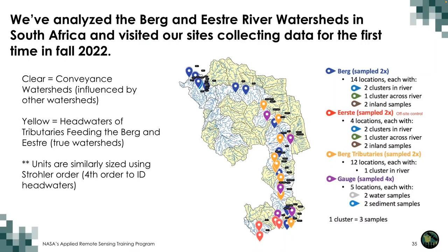So far, we have analyzed the Berg and Irsty River watersheds in South Africa, collecting data for the first time in fall 2022. Clear polygons on our site map represent conveyance watersheds influenced by upstream watersheds, while yellow polygons represent headwater tributary watersheds feeding the Berg and Irsty. Color codes at each site indicate how many eDNA samples were collected.